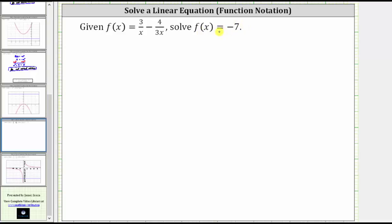To solve f(x) = -7, we are looking for the input or x values of f(x) for which the output is -7.